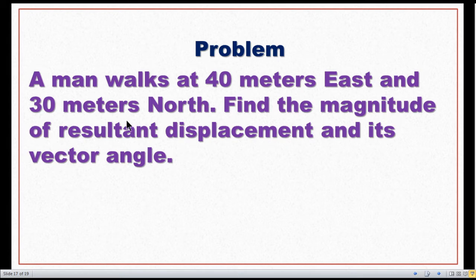Problem: A man walks 40 meters east and 30 meters north. Find the magnitude of resultant displacement and its vector angle by calculation method. Now we solve it graphically.